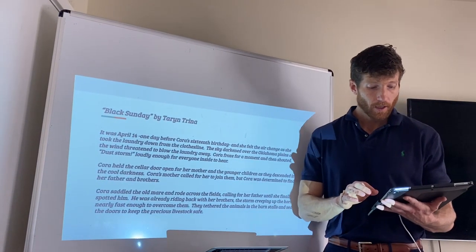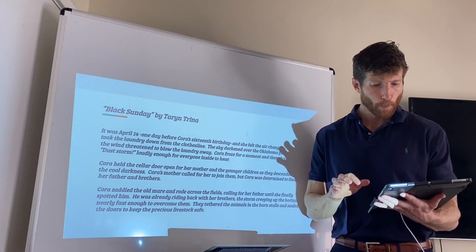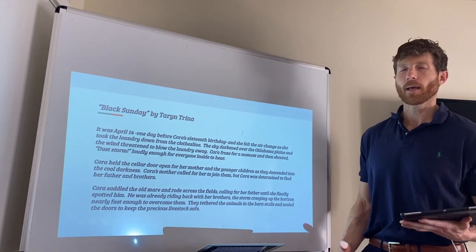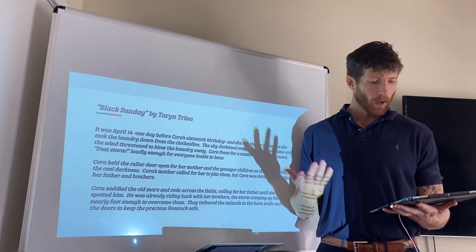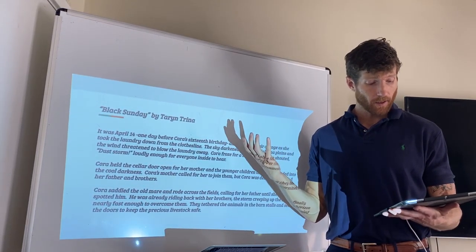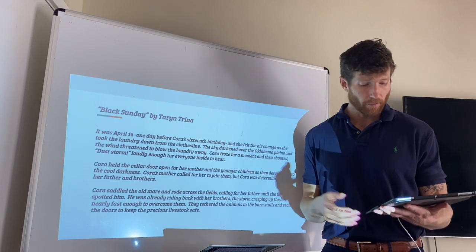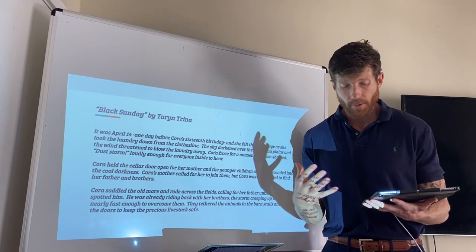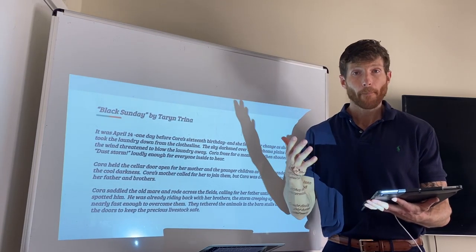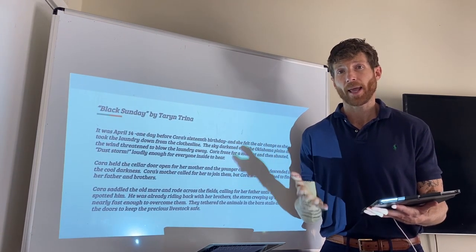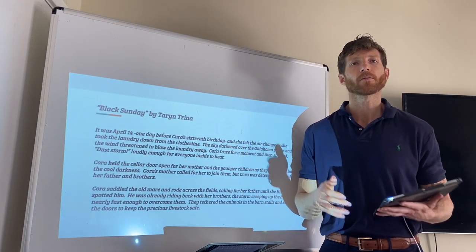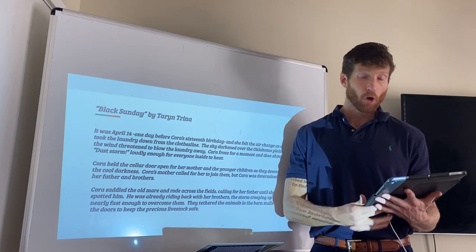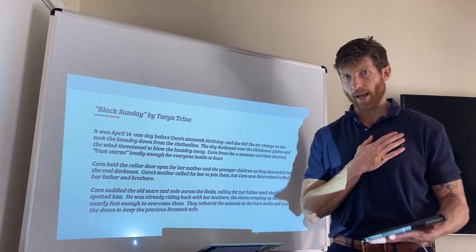To continue with the model, we're going to look at a story called Black Sunday by Taryn Trina. This is considered a work of historical fiction. I want you guys to analyze how the story elements come together to shape the story. Black Sunday tells about a memorable day in history when a powerful dust storm hit the southern Midwest. Read along in your document as I read the story out loud.